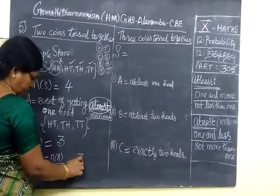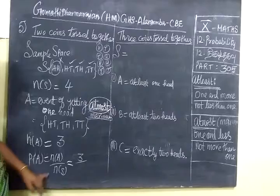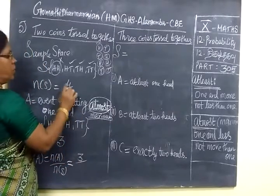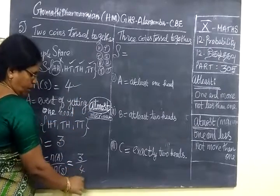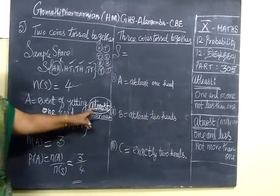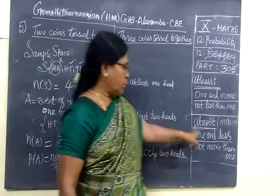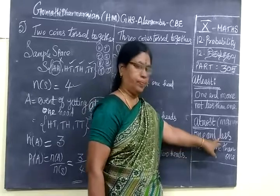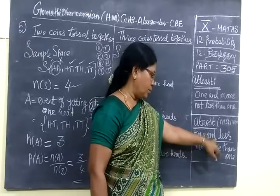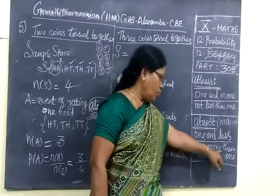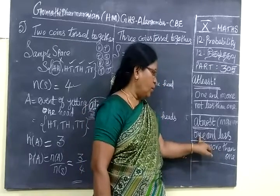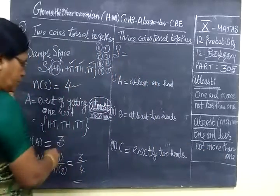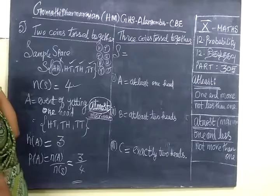Then P(A) equals formula n(A) by n(S), equals 3 by what is the total? Total is 4. So 3 by 4 is the answer. So at most means, didn't you use this formula type, at most one key. One and less. One or less. That means not more than one. It is only one or less, not more than one. That means at most. Just you will see in this way.